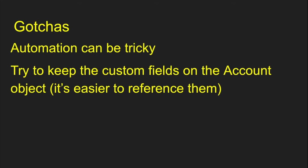There are a couple of gotchas. Automation can be a little bit tricky because most of the time when you're building your automation, you probably want to keep all your fields on the account object — it just makes it easy to reference them. When you need to make custom fields for a person account, you either put them on the account or the contact. I recommend putting them on the same object so you can reference them easily. Most of the time you're working off the account anyway, so you can reference those values from the account. This makes your automation a little bit easier going forward.